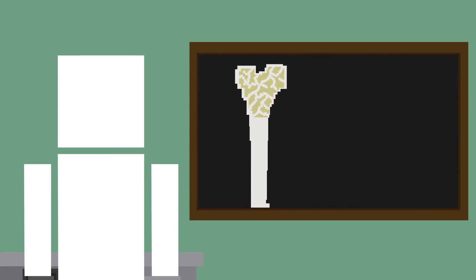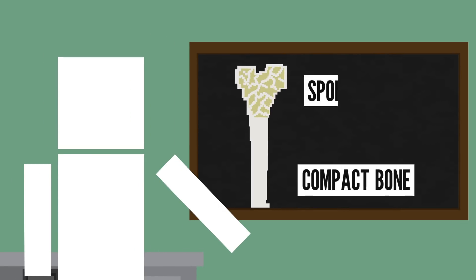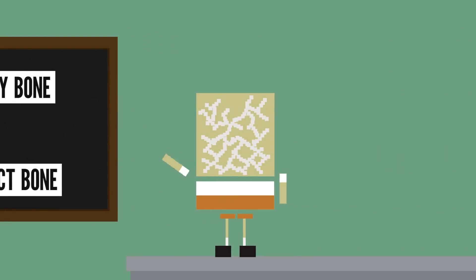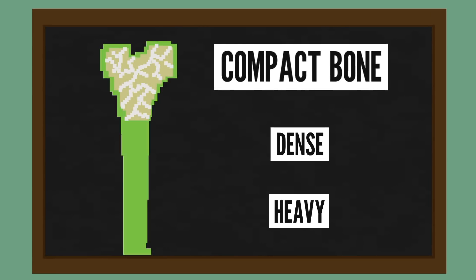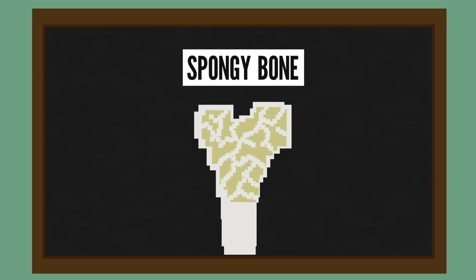Bones have two types of bone tissue, compact bone and spongy bone. No. Hey, isn't that guy copyrighted? Get him out of here. Compact bone is dense and heavy. It needs to be strong, as it's the outside layer of the bone. Spongy bone is lighter and less dense.